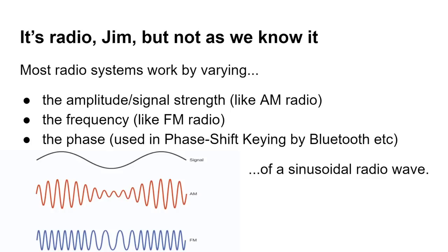It's radio, but not as we know it. We're used to particular types of radio — AM, FM, and phase shift keying found in Bluetooth — and they're all ways of modulating a radio wave that follows a sine wave. You can modify the amplitude, the frequency, or the phase. You start with a sine wave signal and modify it to carry information, and that's what we're used to for Wi-Fi, Bluetooth, AM, and FM radio.